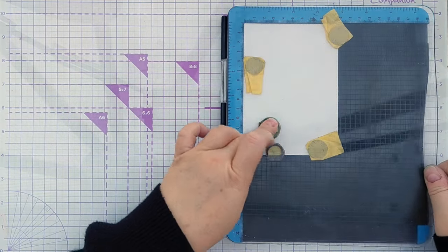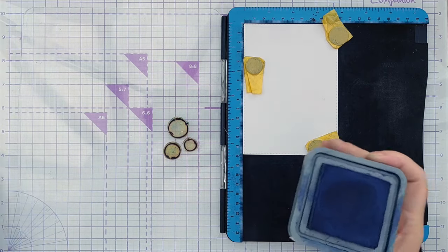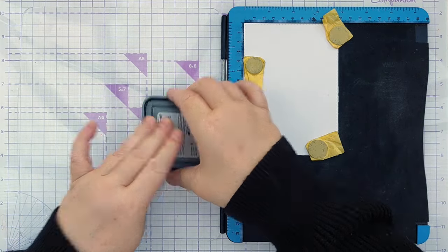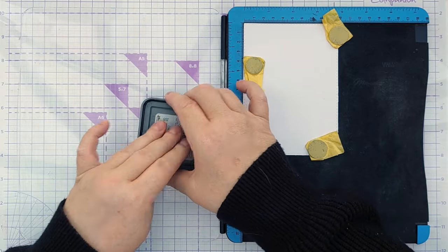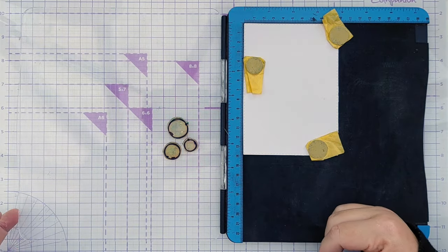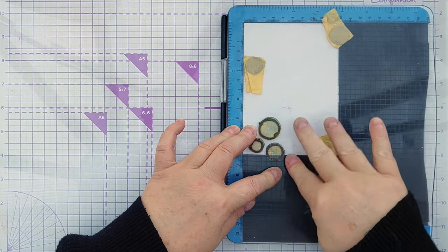So I'll pick up my stamps, take some ink. This is Chipped Sapphire Distress Oxide, which is a lovely indigo colour, a purpley blue. And I'm going to stamp that there.